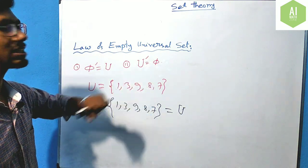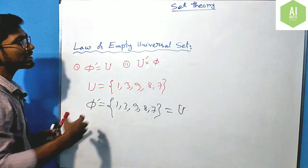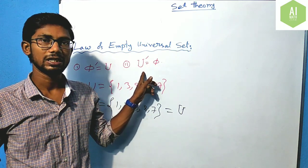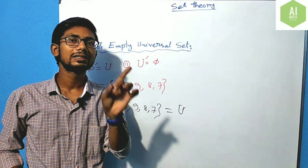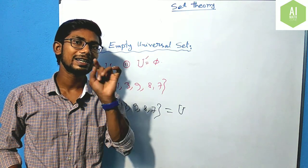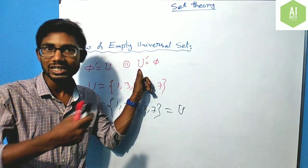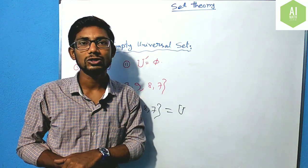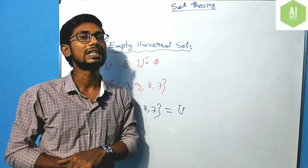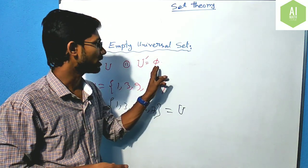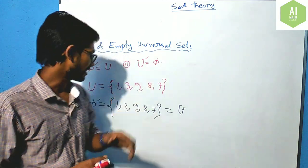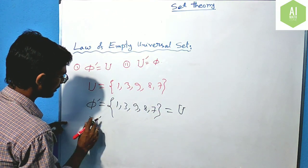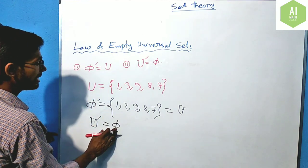For the second part, the complement of the universal set: by definition we exclude all elements of the universal set from itself, leaving nothing behind. So the complement of the universal set is exactly the null set.